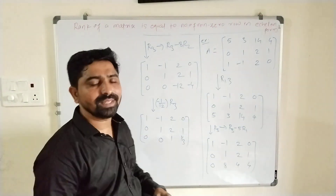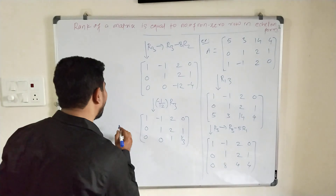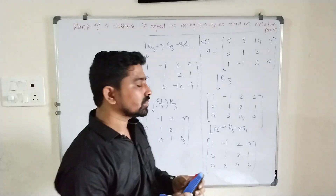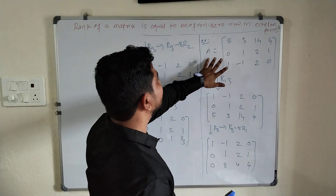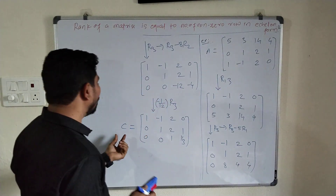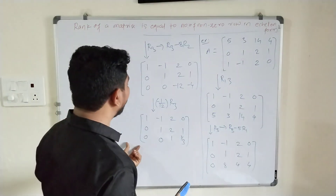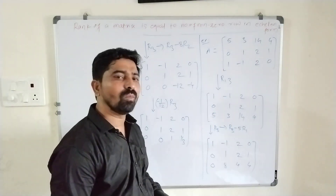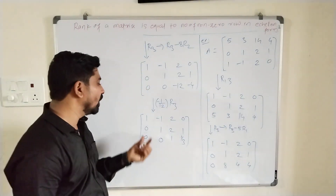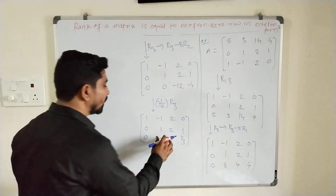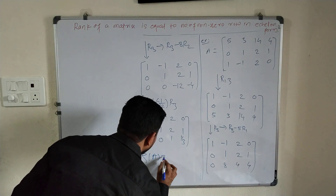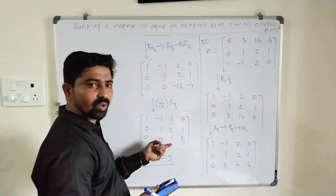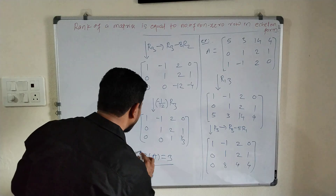Now we find the rank of matrix A. Calling this Echelon form matrix C, since C is equivalent to A, the rank of A equals the rank of C. The rank of a matrix in Echelon form equals the number of non-zero rows. In this matrix, the number of non-zero rows is 3 — Row 1, Row 2, and Row 3 are all non-zero. Therefore, the rank of this matrix is equal to 3.